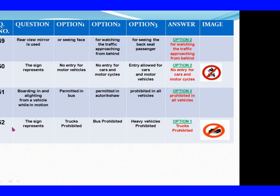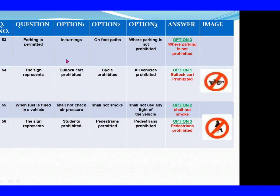Question 52: The sign represents. Option 1: Trucks prohibited. Option 2: Bus prohibited. Option 3: Heavy vehicles prohibited. The right answer is Option 1: Trucks prohibited. Question 53: Parking is permitted. Option 1: In turnings. Option 2: On footpaths. Option 3: Where parking is not prohibited. The right answer is Option 3: Where parking is not prohibited.